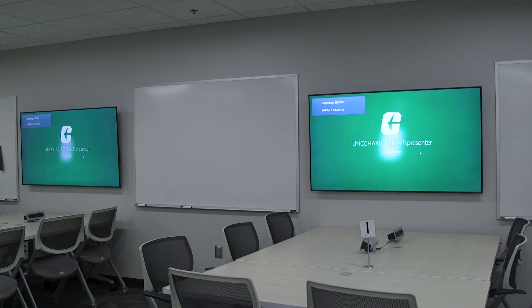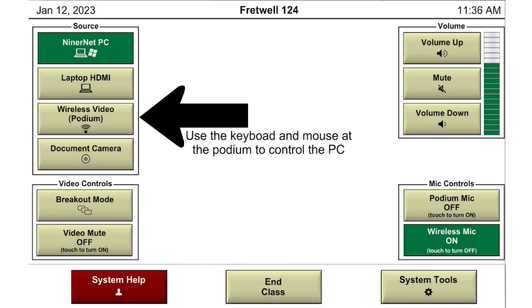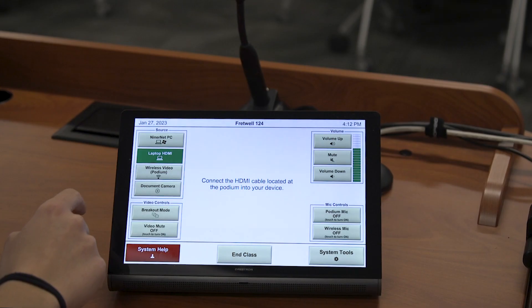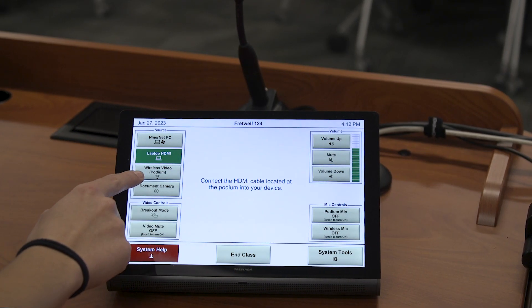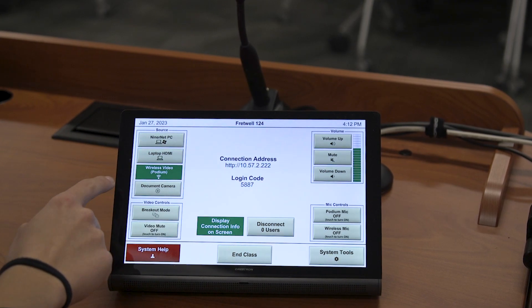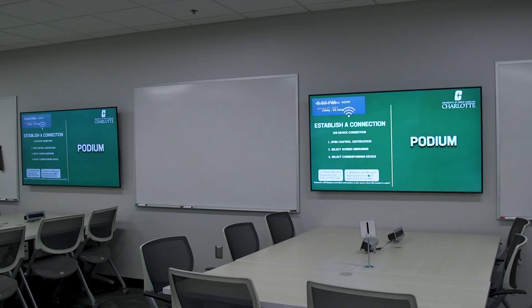Once you click the button, the displays will show what is on the laptop. Next is Wireless Video Podium. This is used to allow the instructor to mirror their laptop, phone, or tablet on all displays or the individual displays of their choice. Once you click this button, it will show IP addresses and codes that you can use to access this feature.